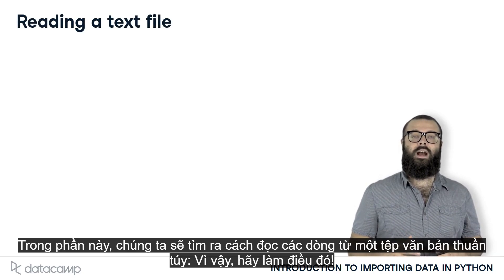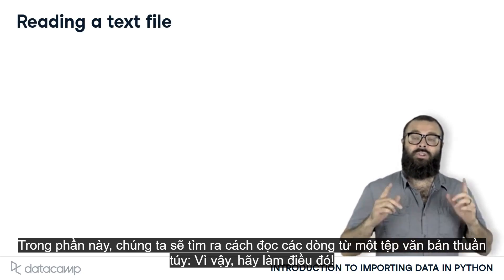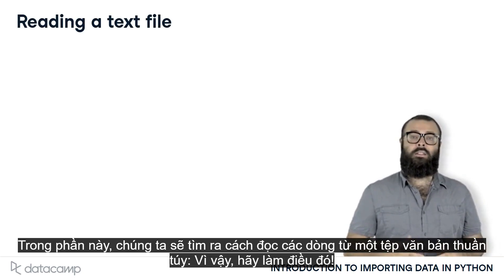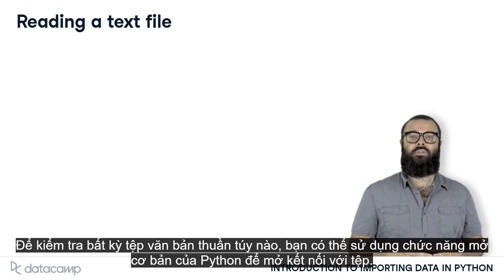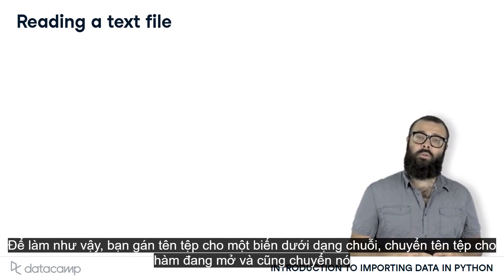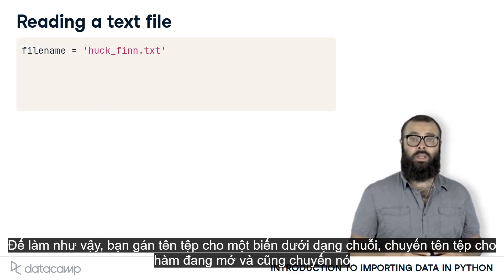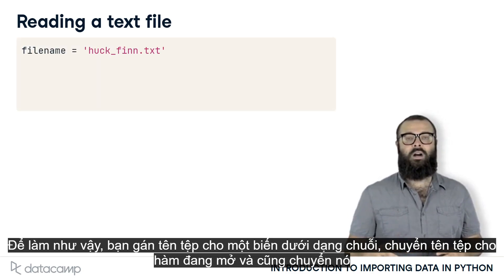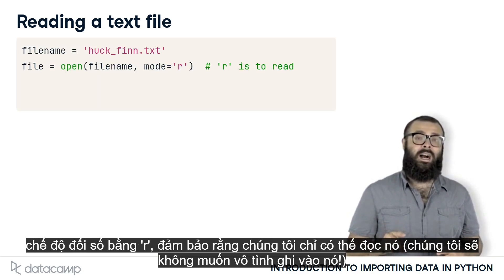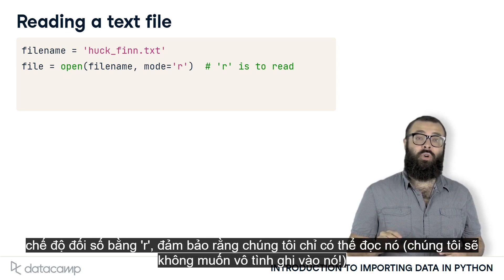In this section, we'll figure out how to read lines from a plain text file. To check out any plain text file, you can use Python's basic open function to open a connection to the file. To do so, you assign the file name to a variable as a string, pass the file name to the function open, and also pass it the argument mode equals r, which makes sure that we can only read it.